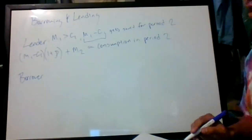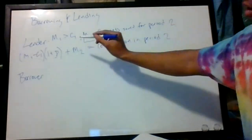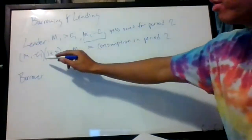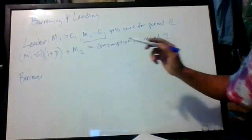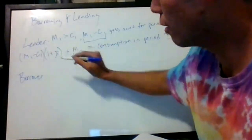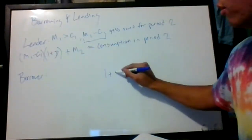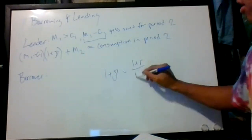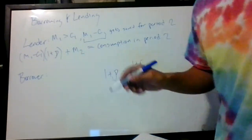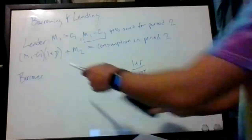To clarify: in this model, consumption in period one is c1, and consumption in period two equals that whole equation — (m1 − c1) times (1 + rho) plus m2. Rho is just a Greek letter, and recall that (1 + rho) equals (1 + r) over (1 + π), so we're taking inflation into account.